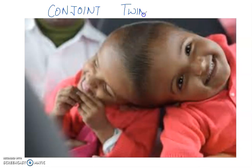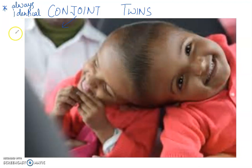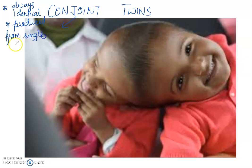I think you all know what twins are. Conjoined twins are always identical and produced from a single egg. They are produced from a single egg that will split into two, but the two embryos that develop fail to separate.